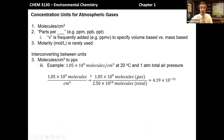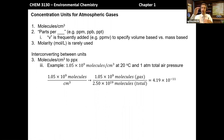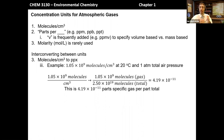Now I take the initial 1.05 times 10 to the 9th molecules divided by the total number of molecules in that volume at that pressure and temperature. I come out with a number of 4.19 times 10 to the minus 11 — molecules of gas per one molecule total, or basically 4.19 times 10 to the minus 11 parts of that specific gas per one part of the total atmosphere.